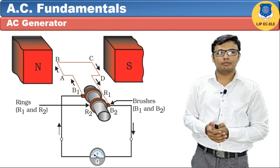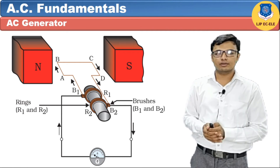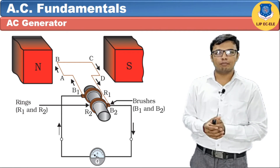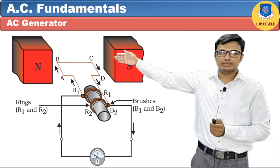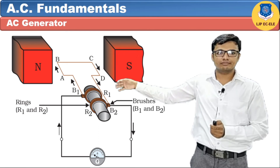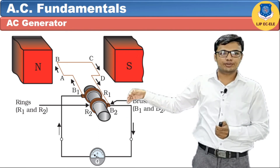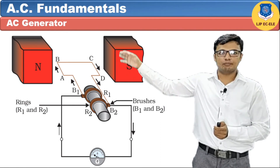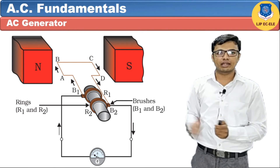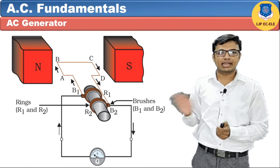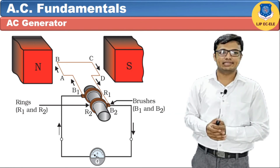During the negative half cycle, EMF is also induced. If we rotate the conducting loop by 180 degrees in a clockwise direction, current flows from A to brush B1, through galvanometer G, back to brush B2, ring R2, point D, point C, and point B — forming one negative half cycle. During the positive half cycle, current flows in one direction, and during the negative half cycle, current flows in the reverse direction. This is AC EMF.